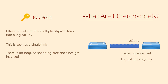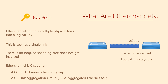Before moving on, there's a couple of things I'd like to briefly mention. Firstly, EtherChannel is a Cisco term. They also call it a port channel or a channel group, as these are the commands used in configuration. Other vendors will use terms like LAG, which is Link Aggregation Group, or perhaps AE, which is short for Aggregated Ethernet. Despite the different names, these are all standards-based. So you can configure an EtherChannel on a Cisco switch and connect it to a LAG on another vendor switch and it will all continue to work just fine.